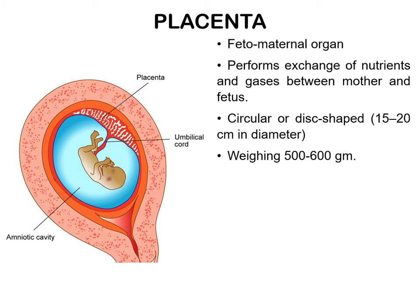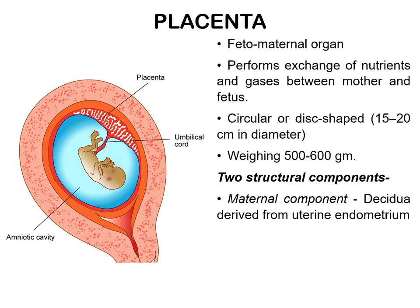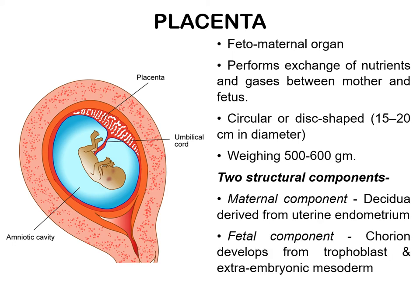It has two structural components. The maternal component is the decidua, which is derived from the uterine endometrium. The fetal component is the chorion, which is derived from trophoblast and the somatopleuric extraembryonic mesoderm.